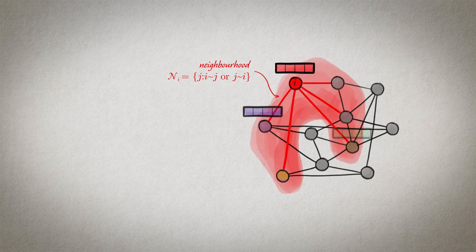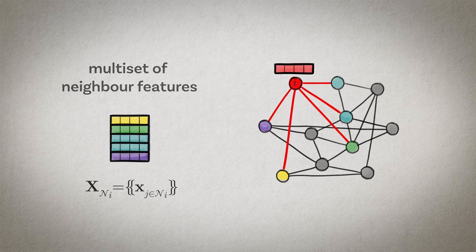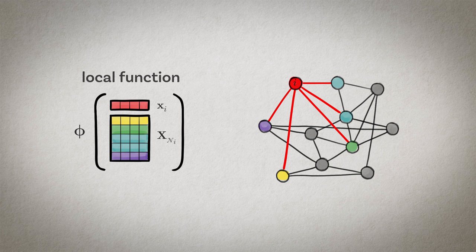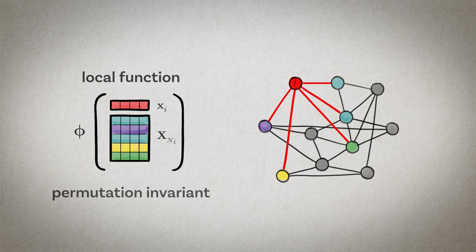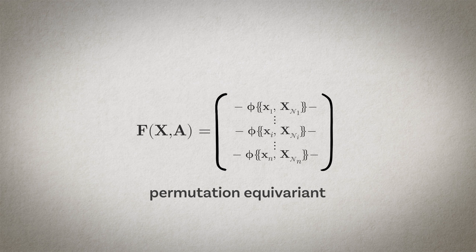A way of constructing a pretty broad class of tractable functions on graphs is using the local neighborhood of a node. We look at the nodes that are connected by an edge to a node i and aggregate their feature vectors together with the feature vector of the node i itself. Because we don't have a canonical ordering of the neighbors, this must be done in a permutation invariant way. So this local aggregation function that I denote by phi must be permutation invariant. When we apply this phi at every node of the graph and stack the results into a feature matrix, we get a permutation equivariant function f. The way how the local function phi is constructed is crucial and its choice determines the expressive power of the resulting architecture.